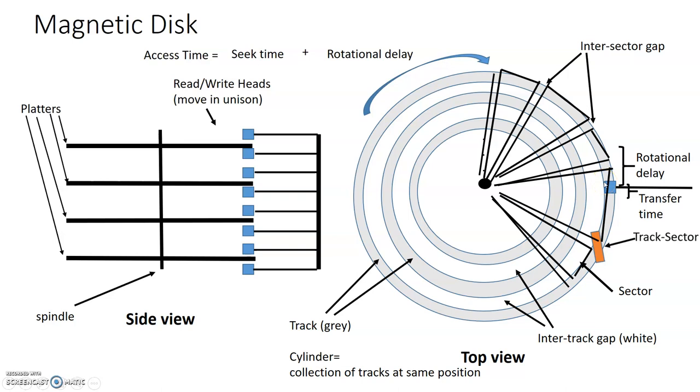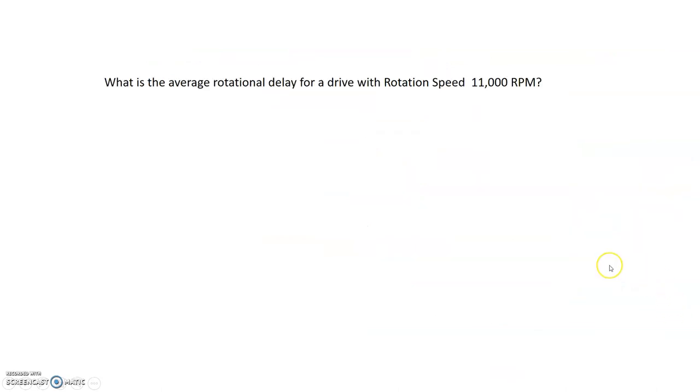So those are elements of the magnetic disk. By the way, one of the areas in the book, they are talking about how to calculate the average rotational delay. Well, suppose we have a drive, and we know its rotation speed is 11,000 revolutions per minute.